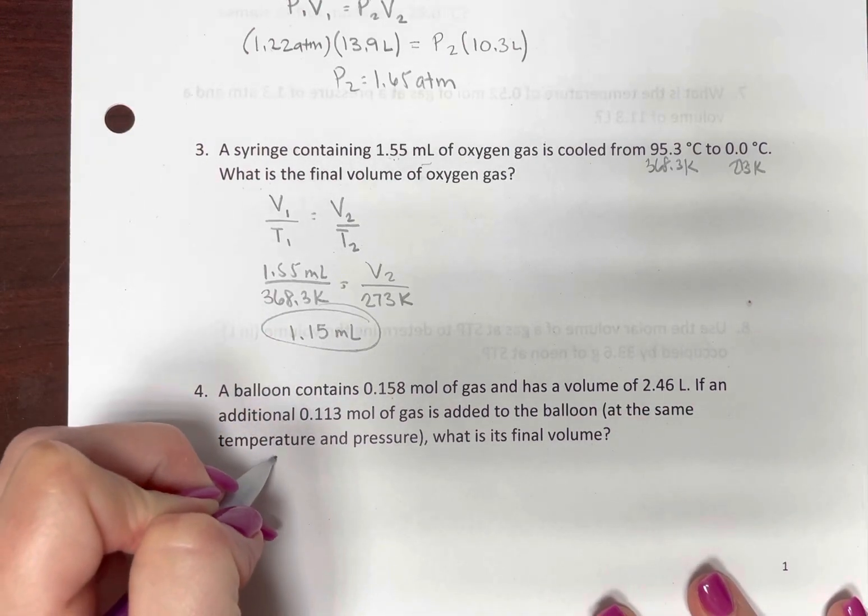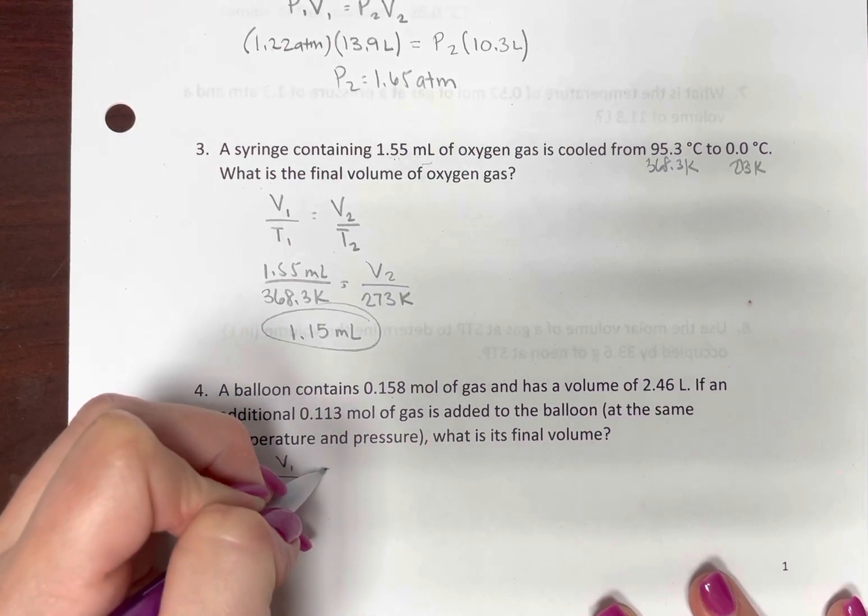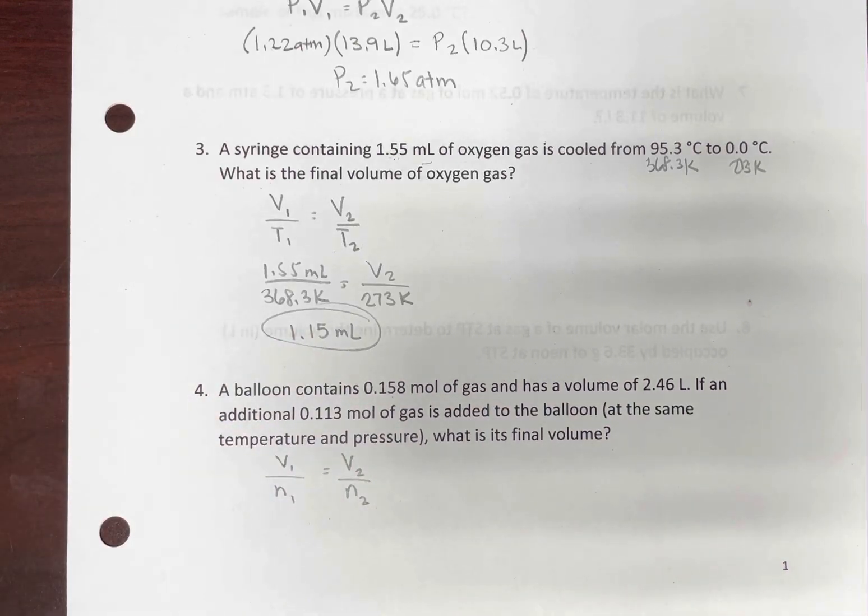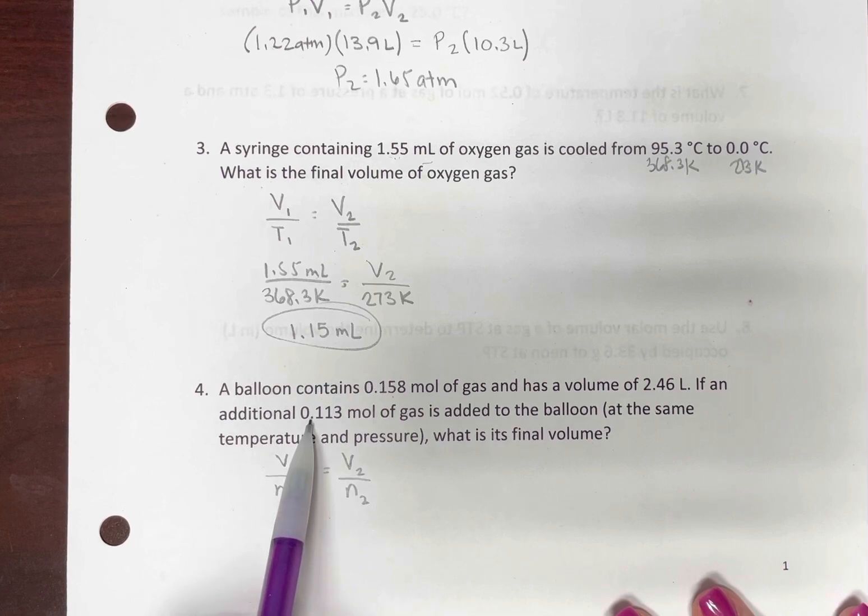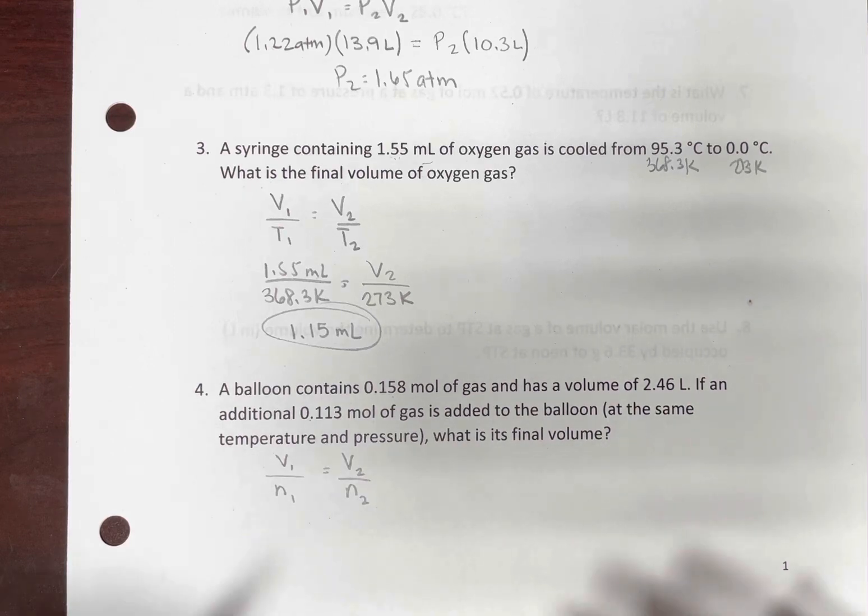So here we're going to have V1 over N1 equals V2 over N2. So as one goes up, the other goes up. As one goes down, the other goes down. Here we're adding gas, so moles are going up, so volume should go up. Let's see what happens.